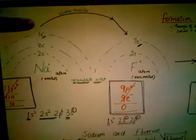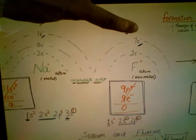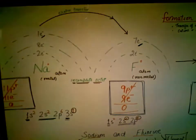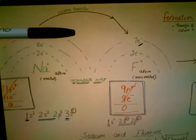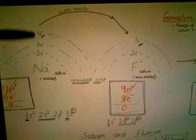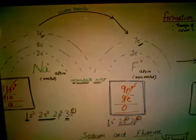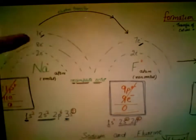That one valence electron from sodium is going to transfer to fluorine. As a result, fluorine will have eight valence electrons. When the one valence electron is transferred, we can hide that shell — we won't even need it anymore because that electron has been donated to the non-metal. So fluorine now has eight valence electrons. At the bottom you can see the electron configuration: the first shell has two electrons, and the second shell has 2 plus 6, which equals 8.